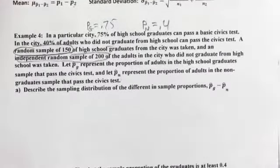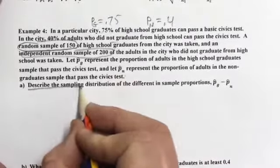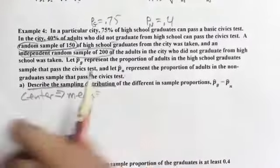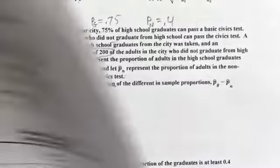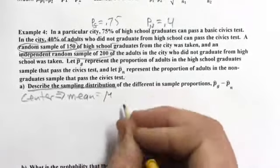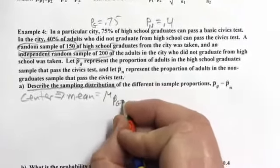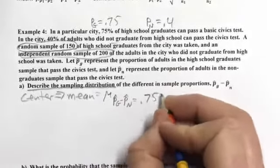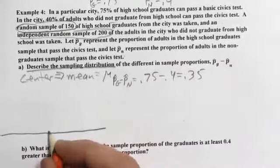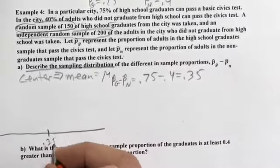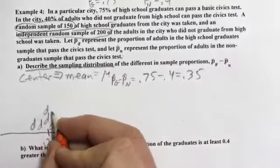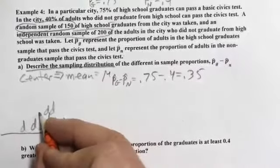We want to describe the sampling distribution of P-hat_G minus P-hat_N. We know the true difference is 0.35, but sampling introduces variability, so the differences will vary around 0.35. Whenever you describe a distribution, you address center, spread, and shape. The center — the mean — of the sampling distribution of (P-hat_G minus P-hat_N) is 0.75 minus 0.40, which equals 0.35. So the differences will be centered at 0.35.